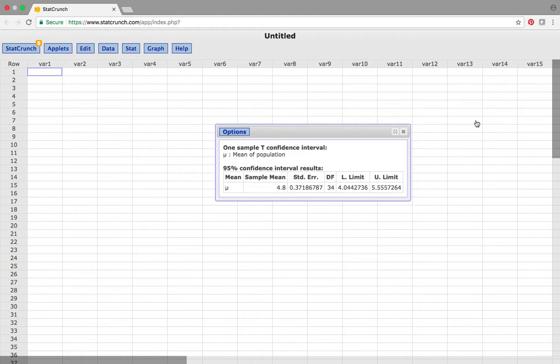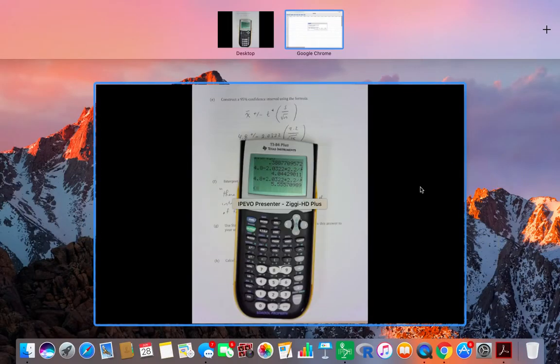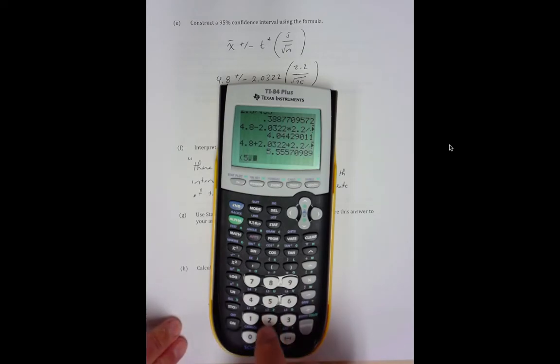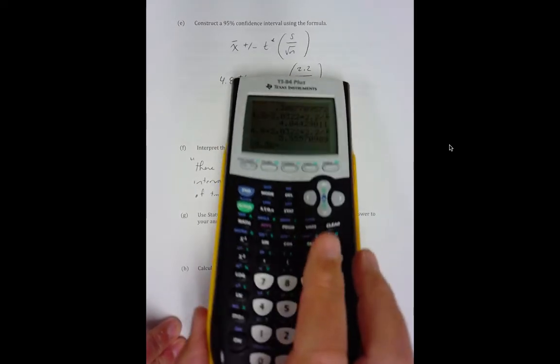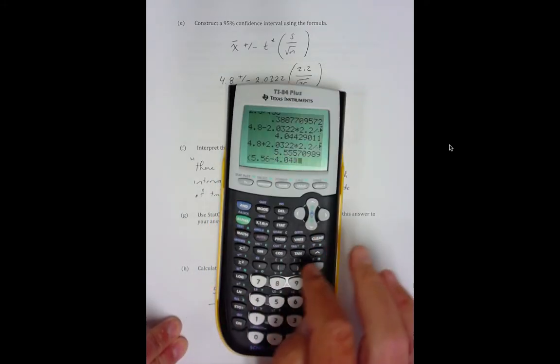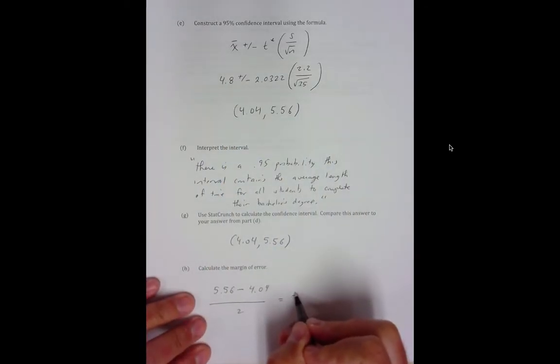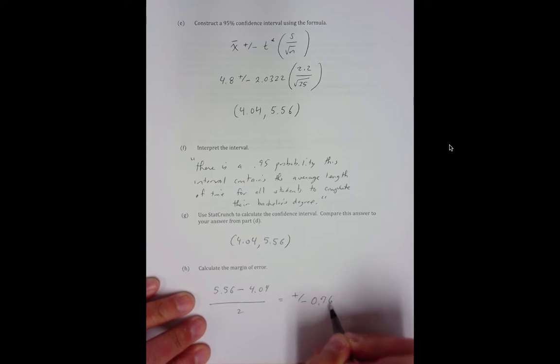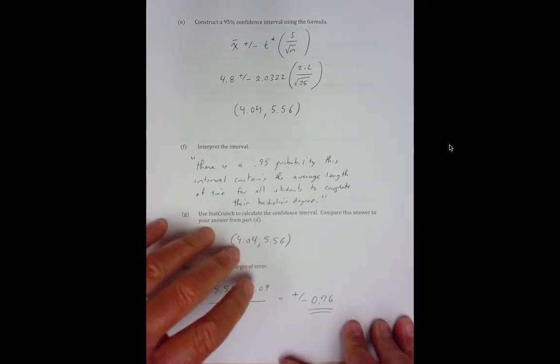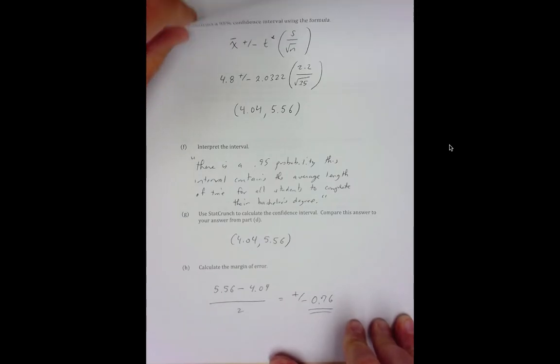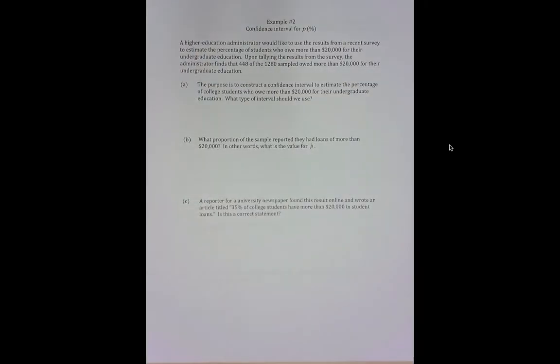Calculate the margin of error. Easy guys. Remember big number minus small number divided by 2. So the margin of error is plus or minus 0.76.